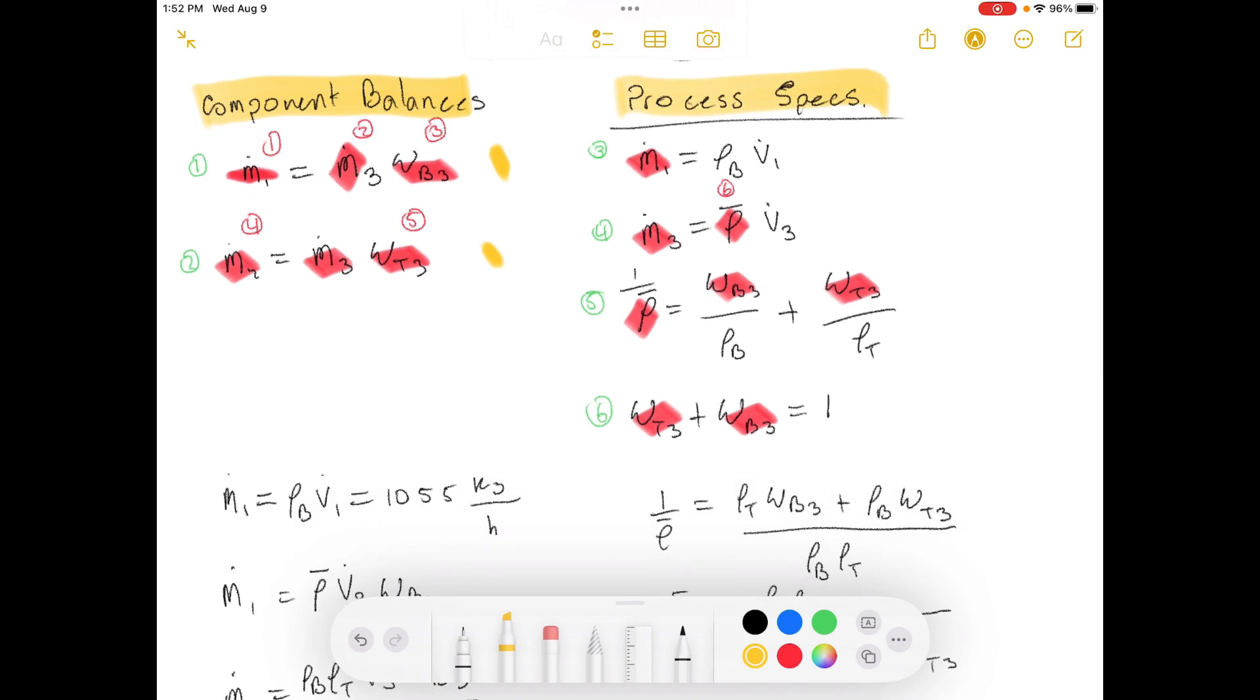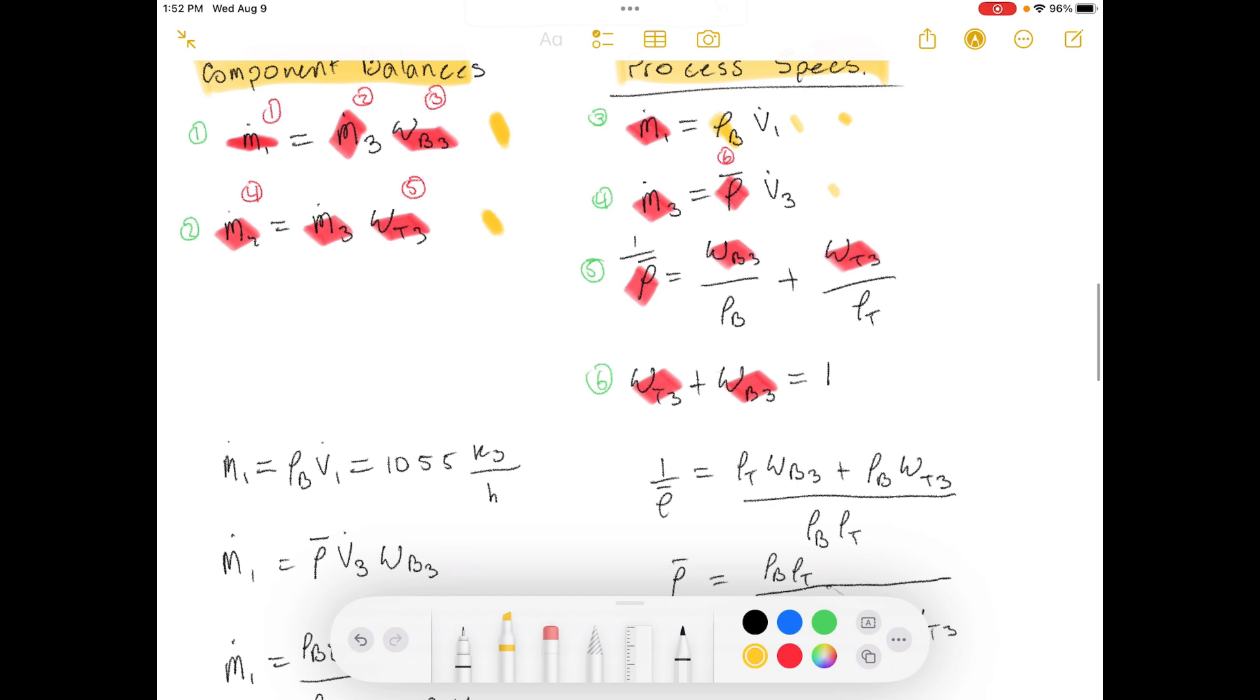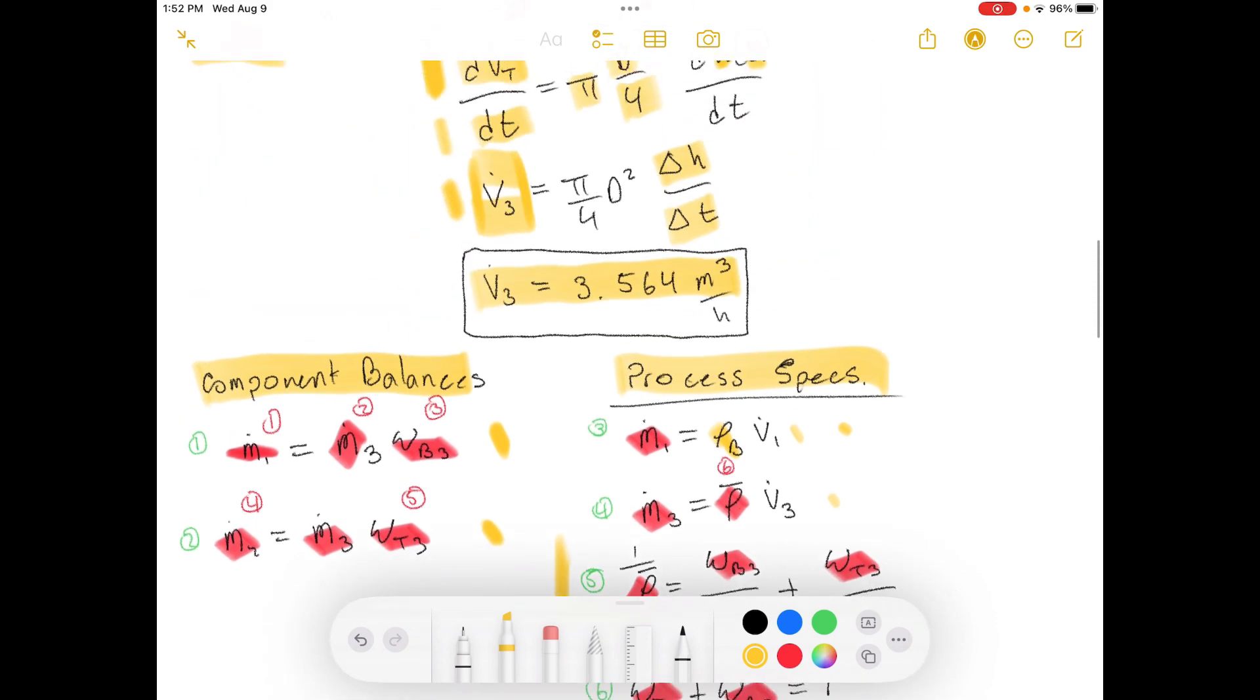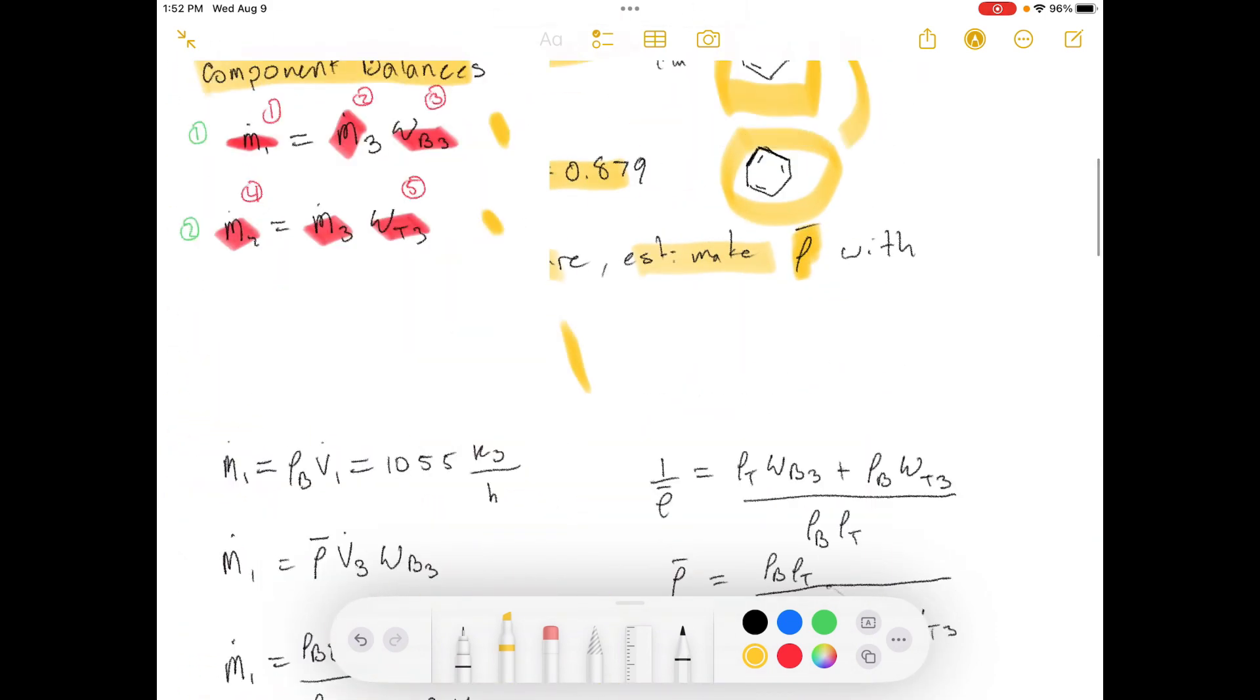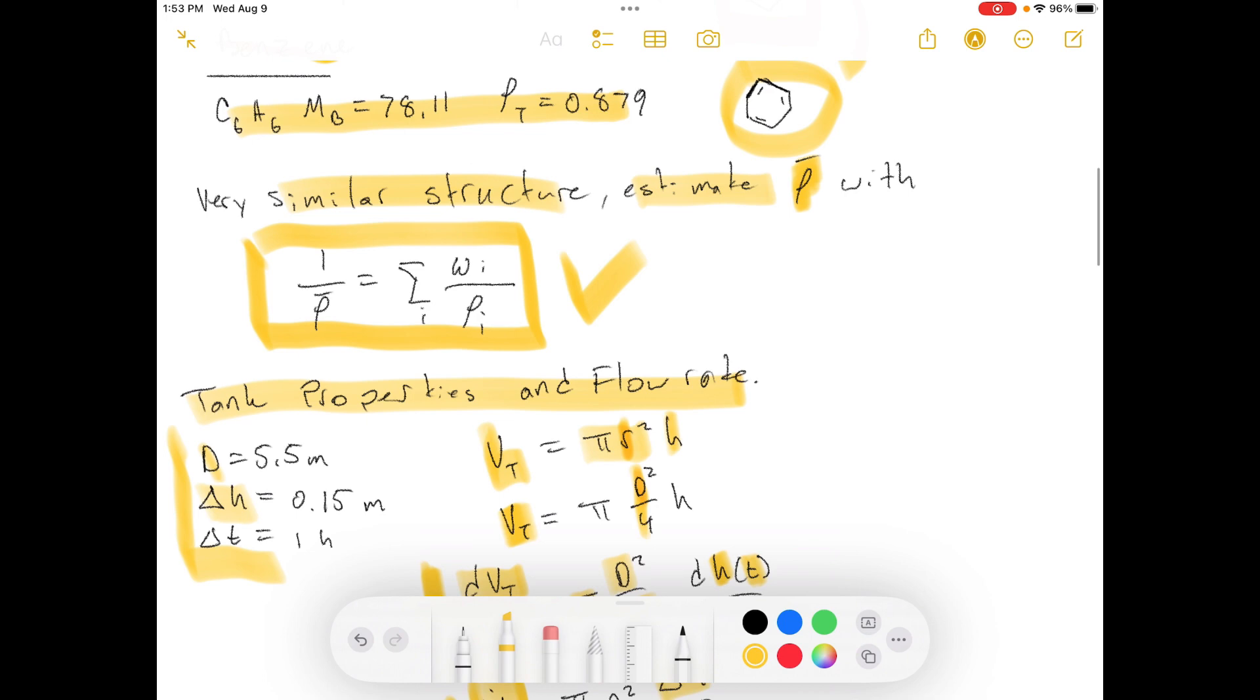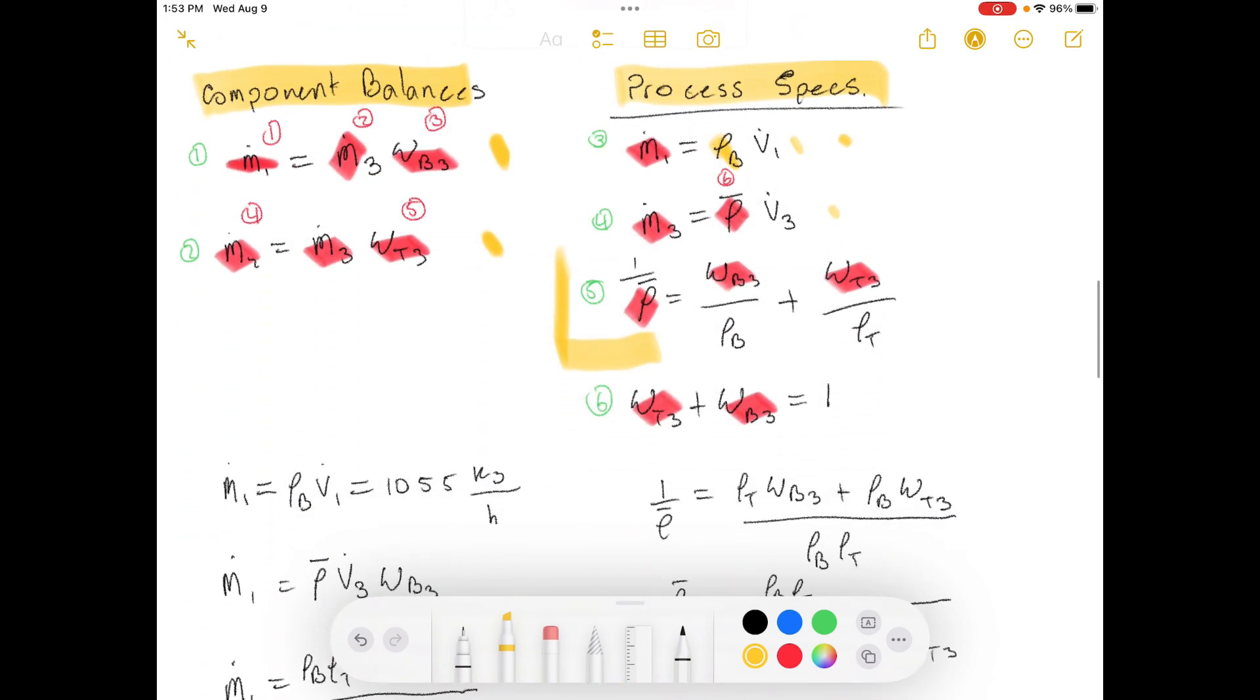So, one of the process specifications is that the mass of stream one is equal to the density of benzene times the volumetric flow rate. And then, you can do the same thing for stream three. And you can do the same thing for stream two, but we don't need to do that. Then, we've got our another process spec here. This is basically what we said before. We're going to assume this thing right here. We're going to assume this.